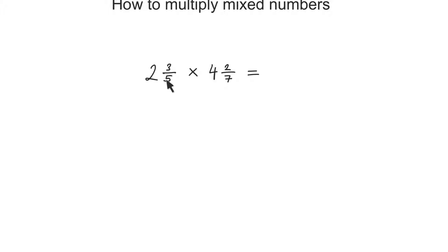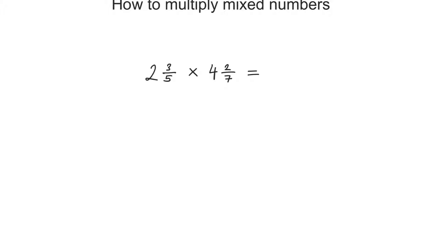How do I convert a mixed number into an improper fraction? All I need to do is multiply the whole number by the denominator and then add the numerator. That will be the numerator of the improper fraction. So 2 times 5 plus 3 will be the numerator. 2 times 5 is 10, plus 3 is 13.